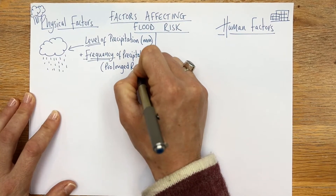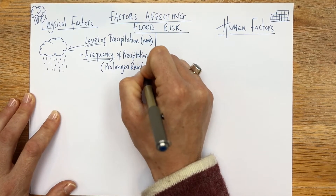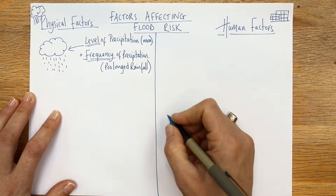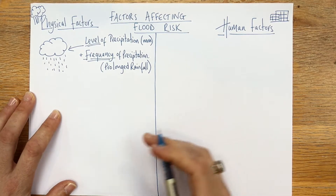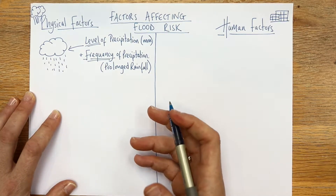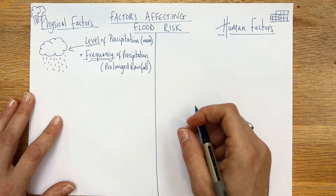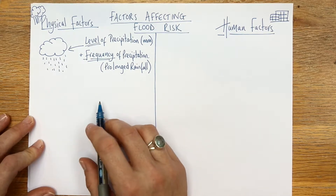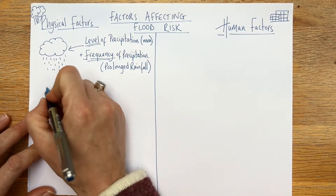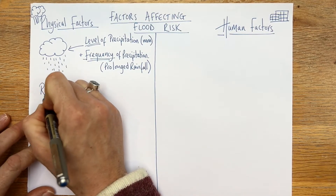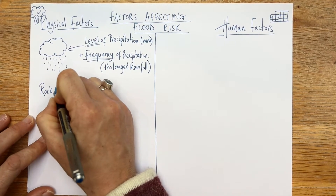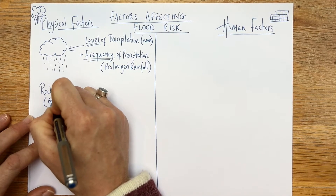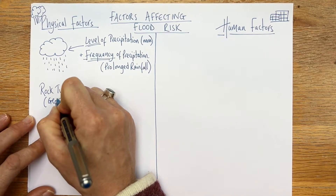If you watch the news, areas that have flooded have often had prolonged rainfall — sometimes weeks or months of heavy rainfall before serious flooding occurs. Next up, we've got rock type.